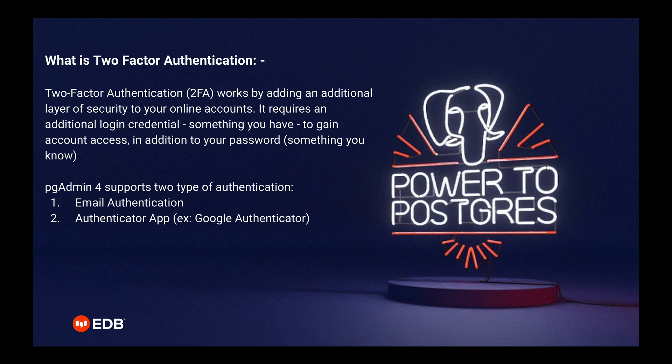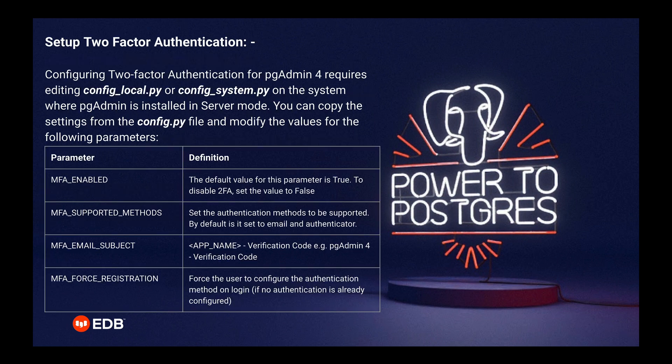pgAdmin4 supports two types of authentication: email authentication and authenticator app, for example Google Authenticator. Configuring two-factor authentication for pgAdmin4 requires editing config_local.py or config_system.py on the system where pgAdmin is installed in server mode. You can copy the settings from the config.py file and modify the values for the following parameters: mfa_enable — the default value is true; to disable 2FA set the value to false. mfa_supported_methods — set the authentication method to be supported; by default it is set to email and authenticator.